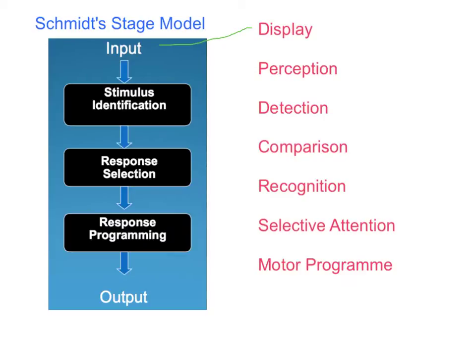We then move on to stimulus identification. This is where we are detecting and interpreting the information that's coming around us. Detect and interpret is how we would define our perception, and that's what you would have to write in the exam.